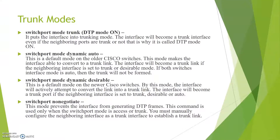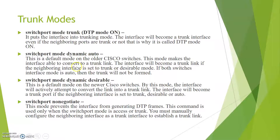The trunking modes are as follows. The default mode, 'switchport mode trunk', will always establish an unconditional trunk between two switches. 'Switchport mode dynamic auto' is passive in nature — it will wait for the other end switch to initiate the trunk. This interface will become a trunk only if the neighboring interface is set to trunk or desirable mode. If both switches are set to auto mode, the trunk will not be formed because of the passive behavior.